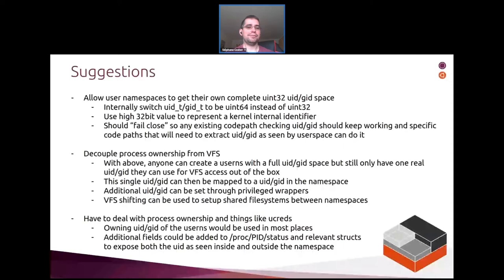That would allow you to call clone or unshare requesting a new user namespace with a feature flag — call it 'isolated' or 'simplified' or whatever. If you have that flag set, you get a namespace with an entire uint32 UID and GID range. Every single UID and GID exists in that namespace; they are not mapped to anything. You can spawn processes, mount virtual filesystems like tmpfs or FUSE — write any UID or GID — it's perfectly fine. It never hits disk, it never goes anywhere outside of that namespace.